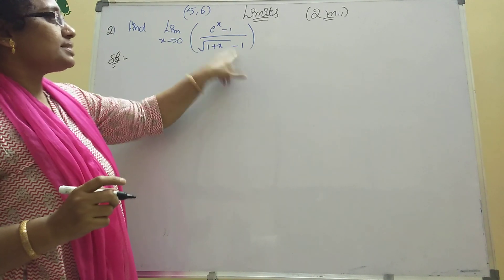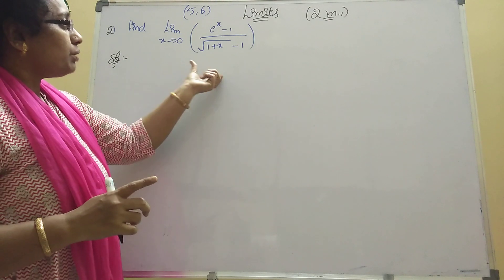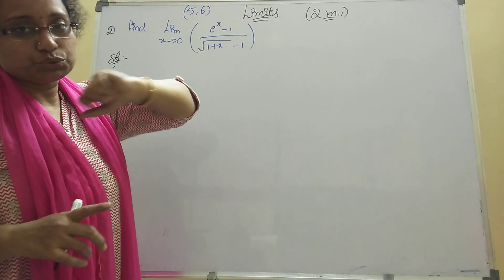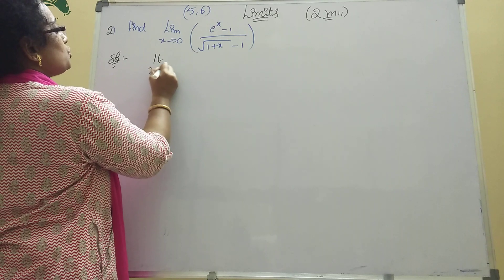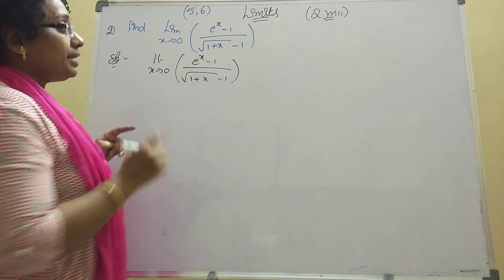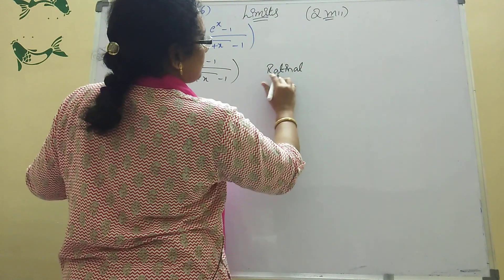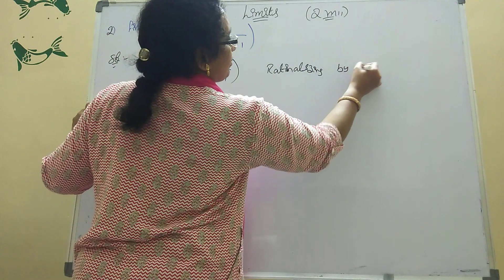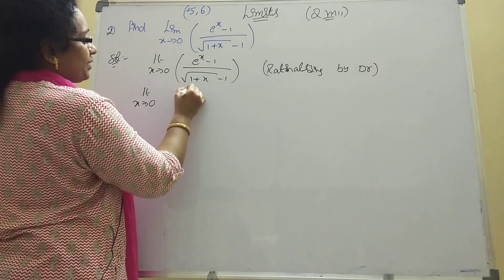Another sum: find limit x tends to 0, e power x minus 1 divided by root of (1 plus x) minus 1. Also there is a model with 3 power x minus 1. In each fifth and sixth session, two-mark problems will come. Here the root term is in the denominator, so rationalize by the denominator.